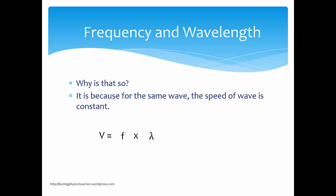Why is that so? It is because for the same wave, the speed of the wave is actually constant. We have the formula: speed of wave equals frequency times wavelength. If you increase the frequency, in order to keep the velocity the same, the wavelength has to be reduced. Or if you reduce the frequency, the wavelength itself has to increase so that V remains the same.